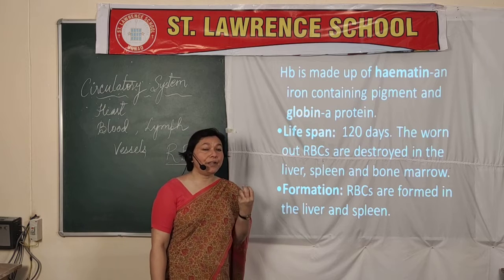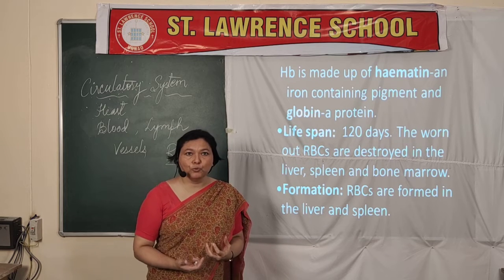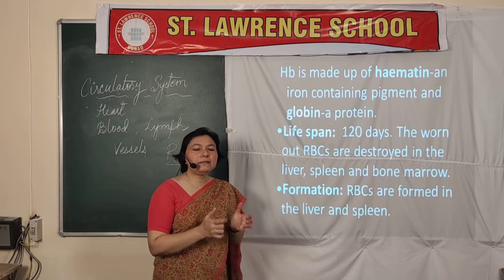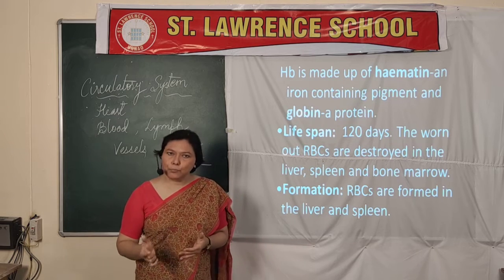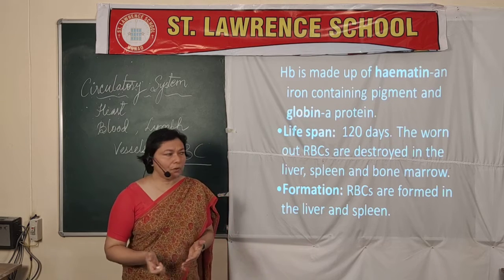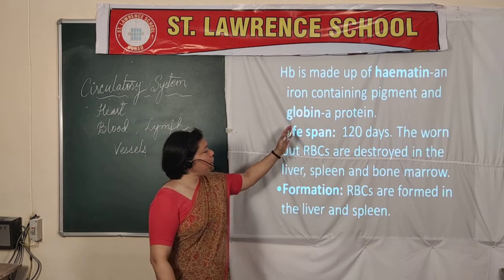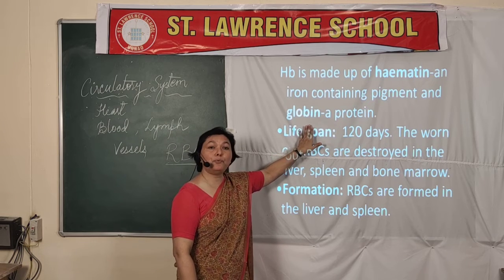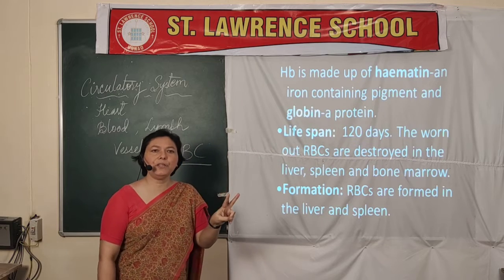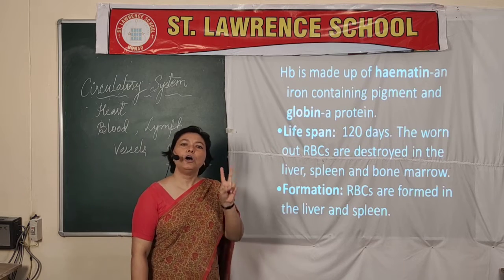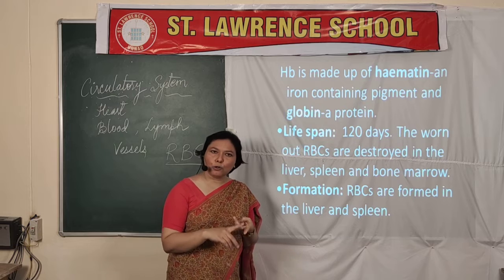Iron is very important — you must have heard that we should take iron in our food because iron makes up the hemoglobin protein. So hemoglobin is made from iron. The other part is globin, which is the protein part of hemoglobin. So hemoglobin is made up of two components: hematin and globin.